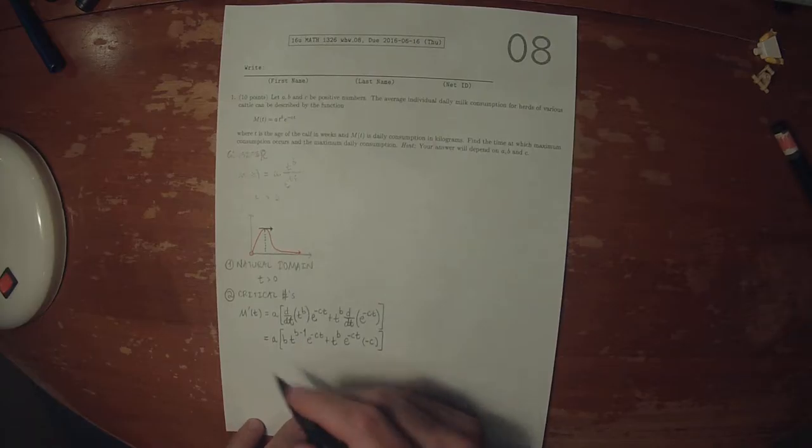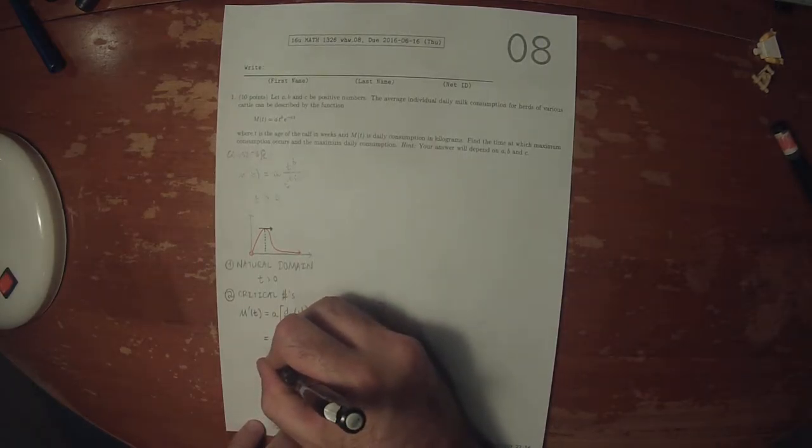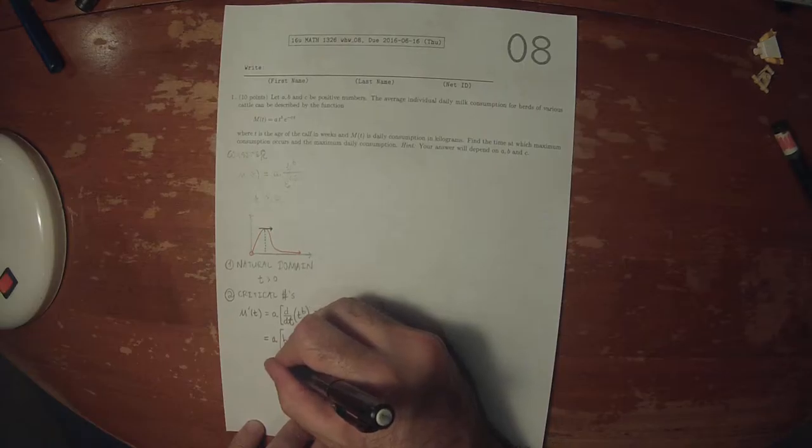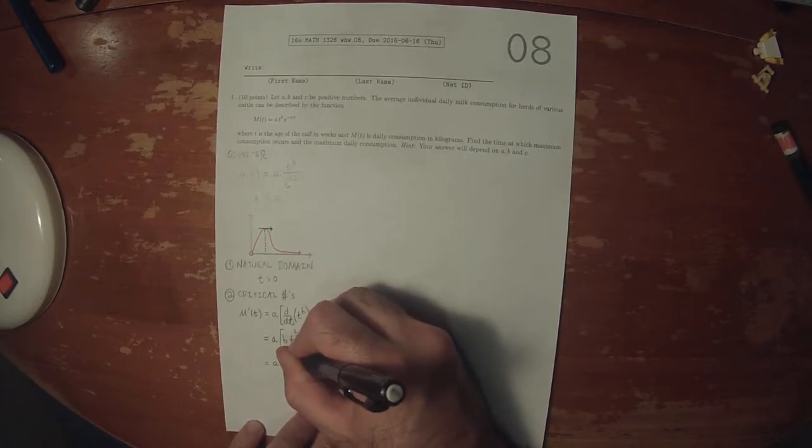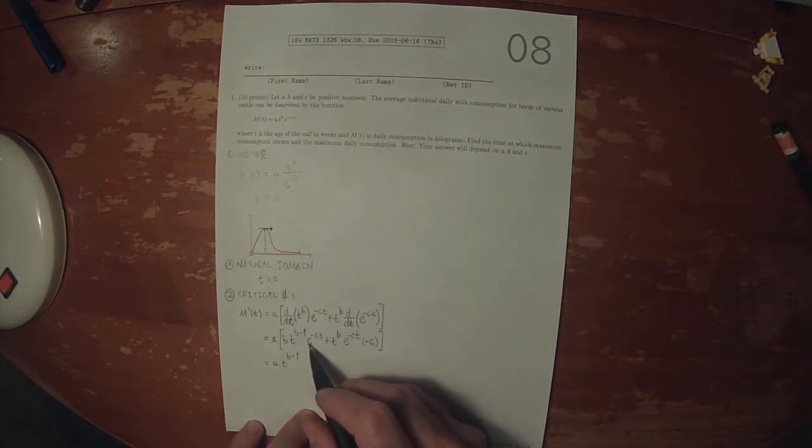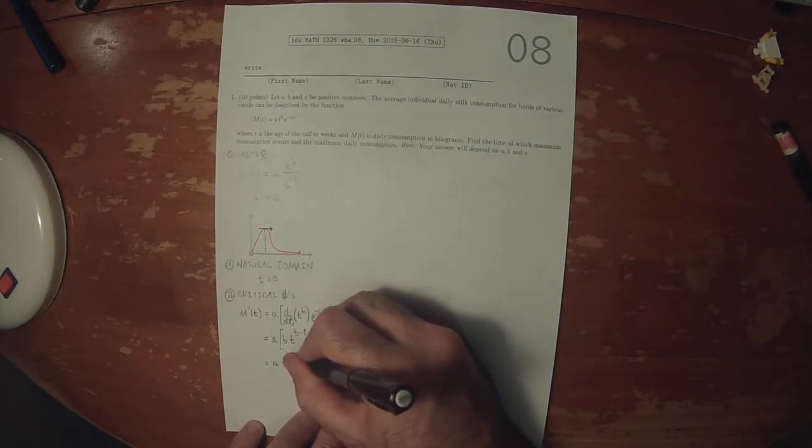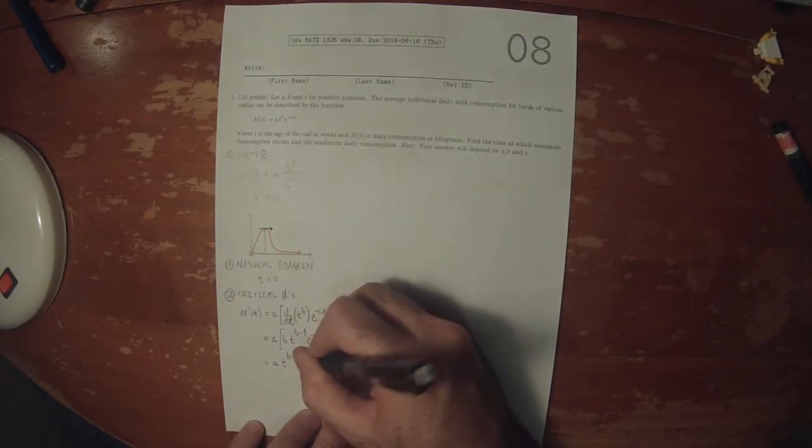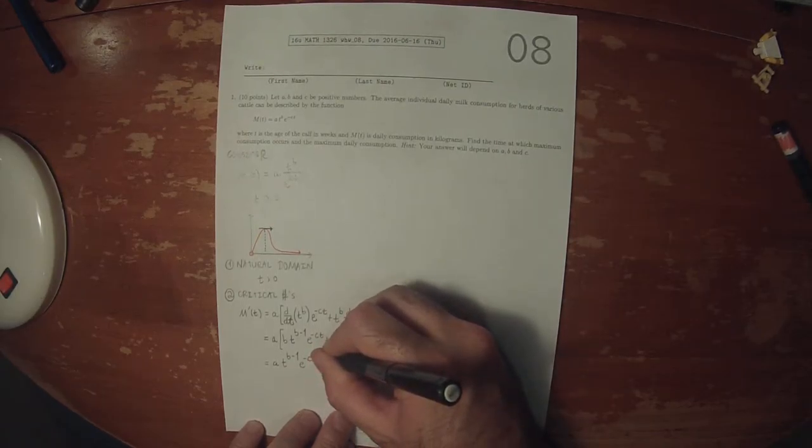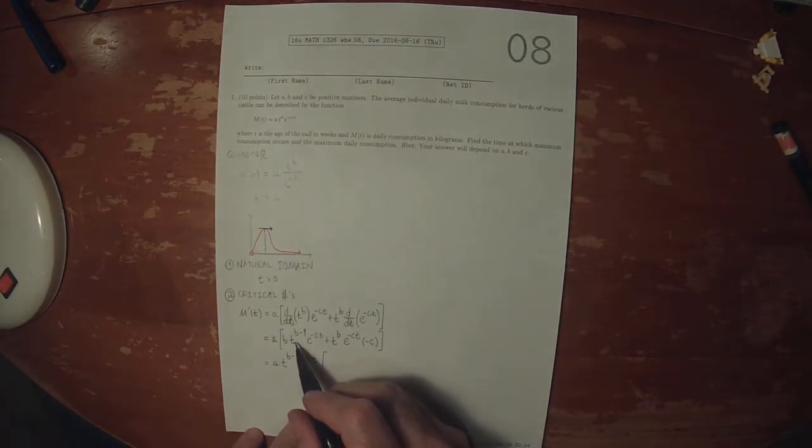So B minus 1 is smaller than B, so we'll factor it out. So this will be A, T to B minus 1. And then E to negative CT is also common. So E to negative CT.